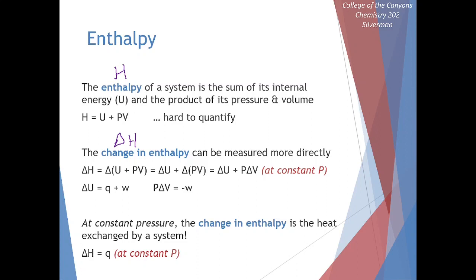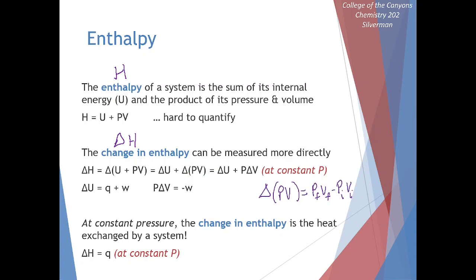The change in enthalpy is going to be the change in internal energy plus the change in pressure times volume: ΔH = ΔU + Δ(PV). If we have the delta on the outside of parentheses, we can distribute it in, since delta just means final minus initial. We get P-final·V-final minus P-initial·V-initial. This doesn't actually simplify unless one of these values is a constant.